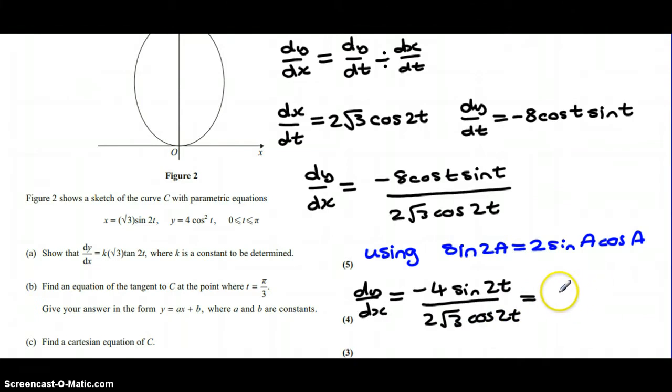A bit of canceling and using our trig identity that sine over cos is tan, we end up with minus 2 tan 2t, that's divided by root 3.